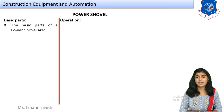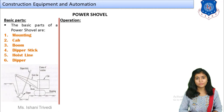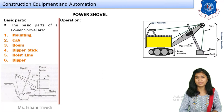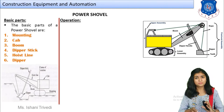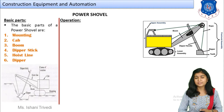Now for the basic parts of a power shovel — students should draw this sketch. The main parts are: mounting, cab, boom, dipper stick, hoist line, and dipper. There are even more parts than what may be included in your books, so let's go through each carefully.